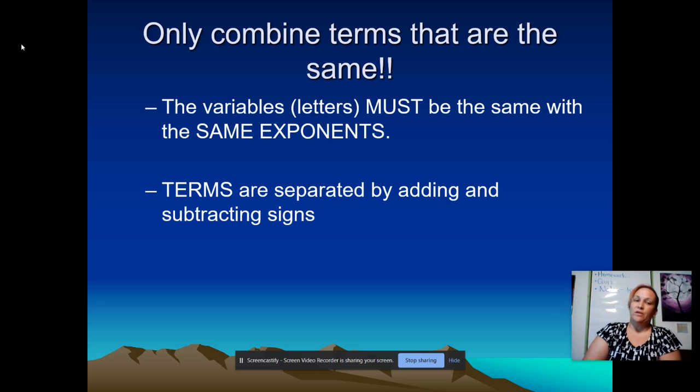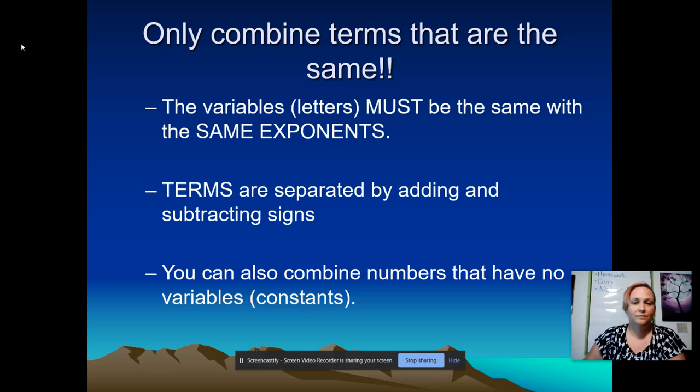Don't forget, we learned last week that terms are separated by adding and subtracting signs, so don't try to separate out two variables that are right next to each other. Those are all considered to be one term. And then finally, you can also combine together numbers that don't have variables. Those are called constants. And so it doesn't have to be the exact same variables. It could be that they both don't have variables. And those would also be like terms.